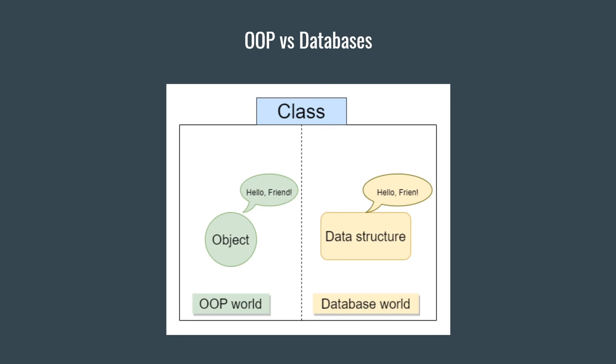The second type of objects are the data structure classes, or data classes, or data holders. These are objects that hold data — for example, objects holding a row from a database, objects that map a JSON, or data transfer objects. This type of objects is the opposite of traditional objects: they should have all their state exposed and they shouldn't encapsulate anything. At most, they should have methods for providing their data more conveniently, like getFullName in addition to getFirstName and getLastName.